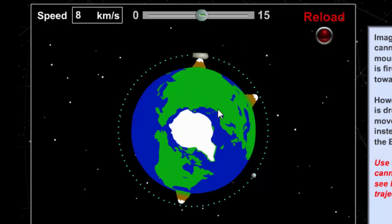8 kilometers per second, which is equivalent to around 17,000 miles per hour, is almost the speed of the International Space Station around the Earth. The International Space Station is around 200 miles above the surface of the Earth.